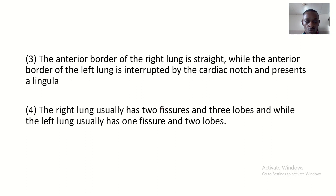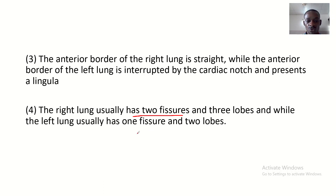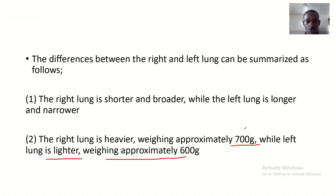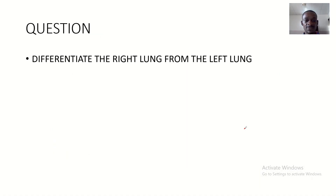The right lung usually has two fissures and three lobes — two fissures separating three lobes — while the left lung usually has one fissure and two lobes. So the right lung has two fissures and three lobes, while the left lung has one fissure and two lobes.